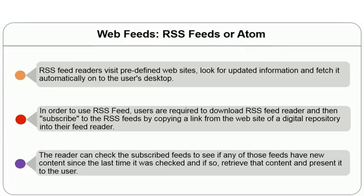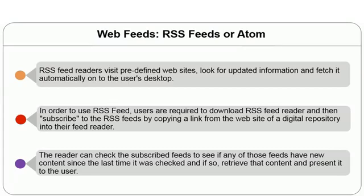The content is dynamic, though generally predefined. For example, subscribing to science or semantic web articles means whenever an article is published, it comes into your feed reader. To use RSS feed, download any RSS feed reader and subscribe to feeds by copying the link. It is like subscribing to a newspaper — once you subscribe, the feed sends data to your computer every time. Digital libraries and most public libraries provide this service. RSS feed icons are typically represented by an orange rectangle with the letters XML or RSS.